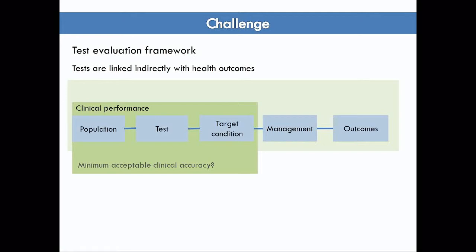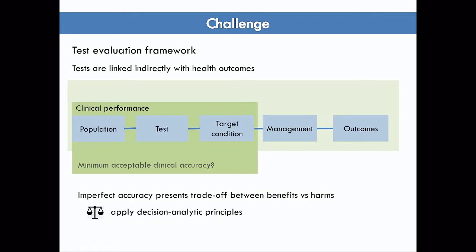The challenge with tests is that they're indirectly associated with health outcomes. For that clinical performance study, if we had a perfectly accurate test, the patient would gain all the benefits of that management. But we're in a situation where the test provides imperfect accuracy — it might be a huge improvement, but not perfect. So there's a trade-off between the benefits of the information and the potential harms of misclassification. What I'm going to introduce is using established decision analytic principles to consider that trade-off and set an acceptable performance level.